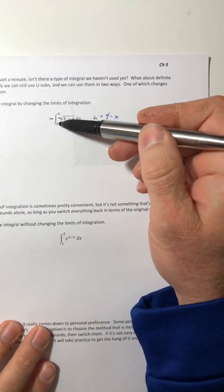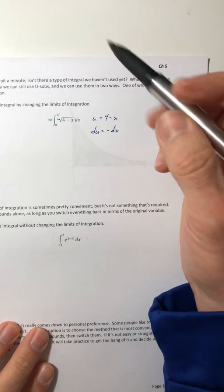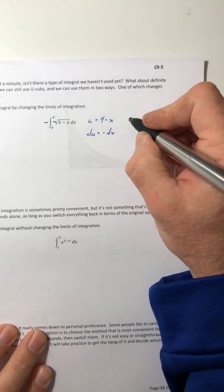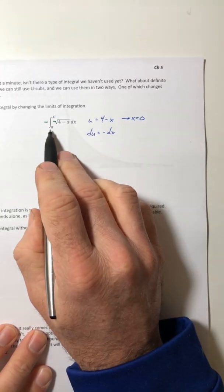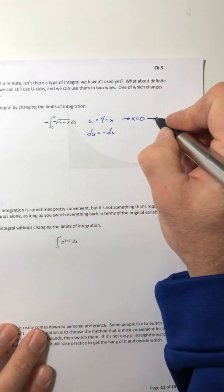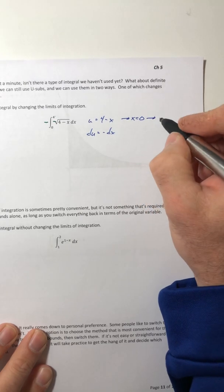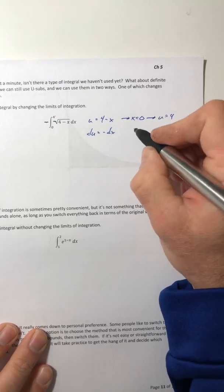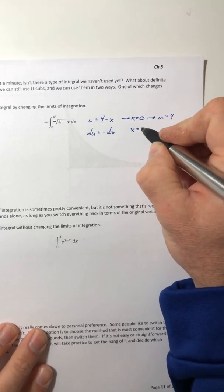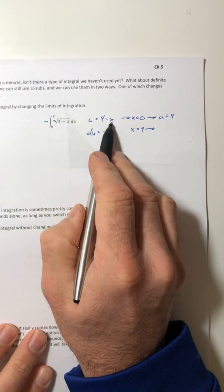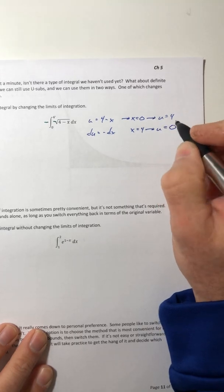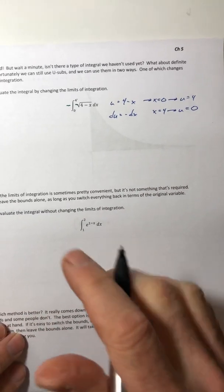But it's a definite integral, so I need to do something with these bounds. So when x is equal to 0, that's the lower bound. If I plug that in for x, that means u is going to equal 4. And when x is 4, that's the upper bound, I'm going to still plug it in for x, and my u comes out to equal 0.